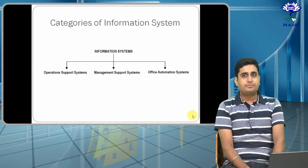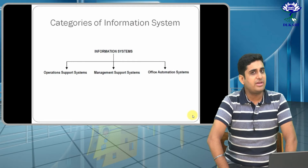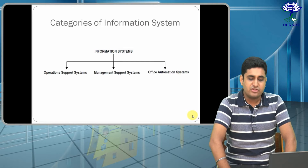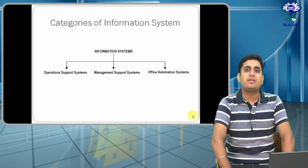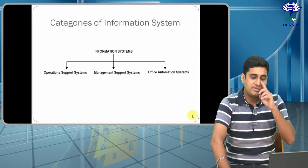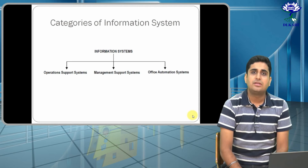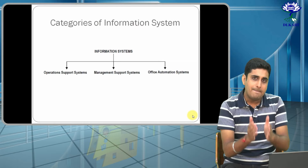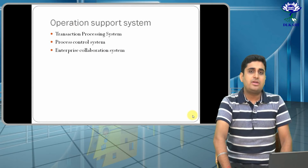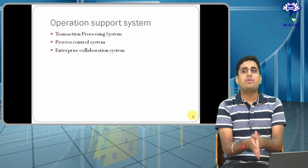The categorization of an information system is done in three different ways: first is Operation Support System, then Management Support System, and Office Automation Systems. In these three categories, I'll be explaining what each category means. Operation Support System in turn consists of three more subcategories.